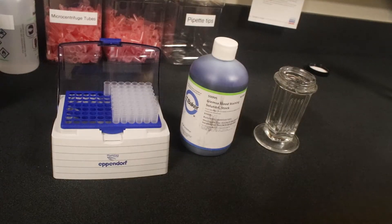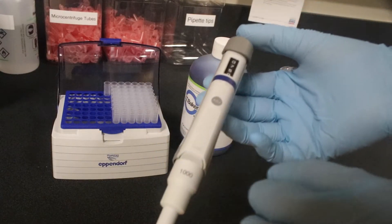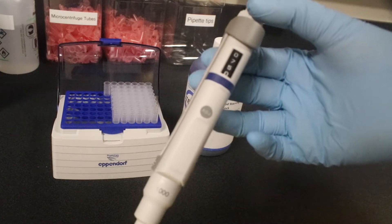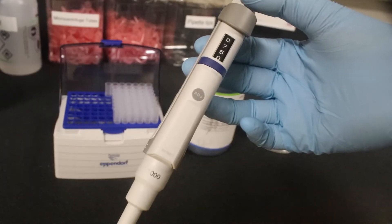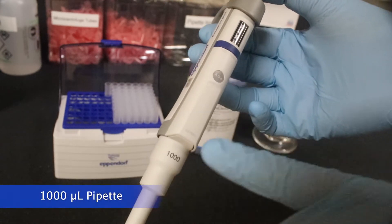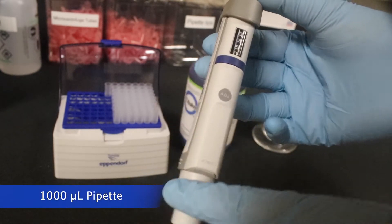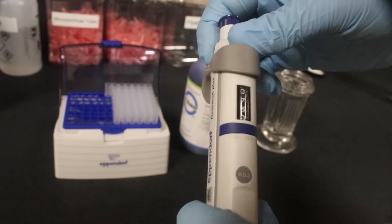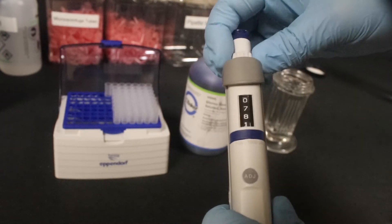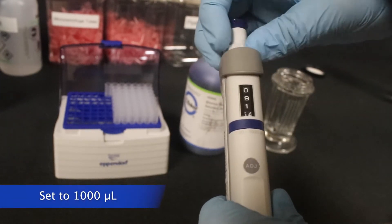Now, the first step is going to be to put the concentrated Yamsa stain into the Coplin jar that will then dilute with water. But first, grab the 1,000 milliliter pipette and set it to 1 milliliter or 1,000 microliters.